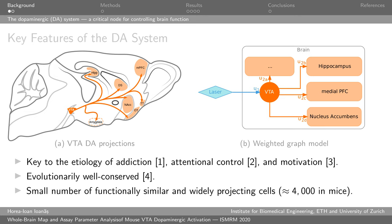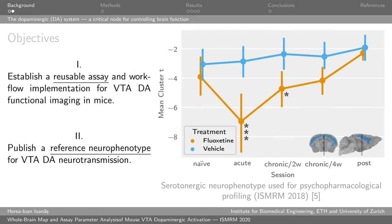This might aid, for instance, in getting better estimates and control over individual projections, and in disambiguating excitability at the soma from transmission at the synapse. The objectives of our study are to establish a reusable assay and a workflow implementation for VTA dopaminergic functional imaging in mice. This consists of an evidence-based set of recommendations and, of course, the presentation of the evidence which leads to these recommendations.